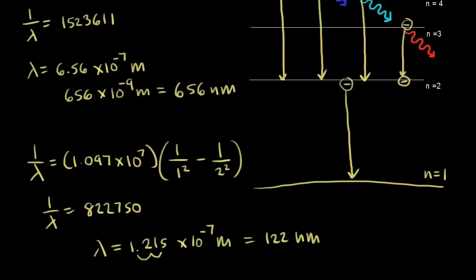122 nanometers is not a wavelength we can see — it falls into the ultraviolet region, so we can't see it. We can only see wavelengths in the visible spectrum. This represents a line in a different series. You can use the Balmer-Rydberg equation to calculate all the other possible transitions for hydrogen. The emission spectrum of hydrogen can be explained using the Balmer-Rydberg equation, which was derived using the Bohr model of the hydrogen atom. Even though the Bohr model is not reality, it allows us to figure things out and realize that energy is quantized.